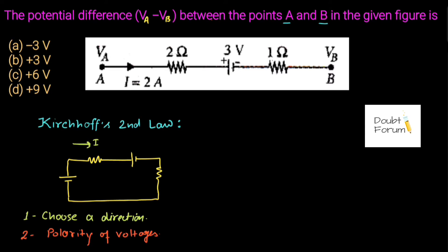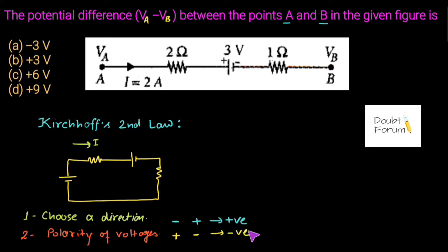To understand the polarity, remember: whenever we move from lower potential to higher potential, we mark that as positive voltage. Whenever we move from higher potential to lower potential, we mark that as negative voltage. You can take the opposite convention, but whatever you choose, keep it for the whole circuit analysis. Here I will mark positive voltage for lower-to-higher potential movement, and negative for higher-to-lower.